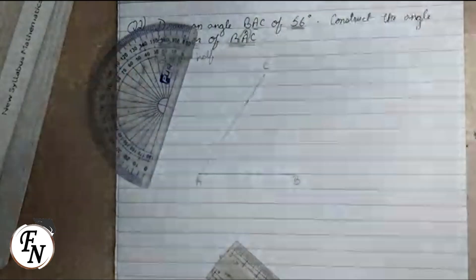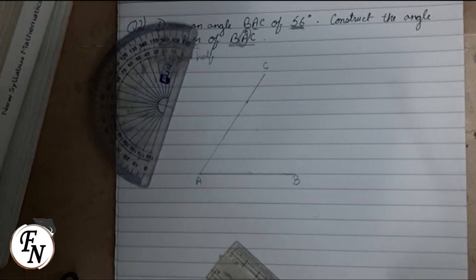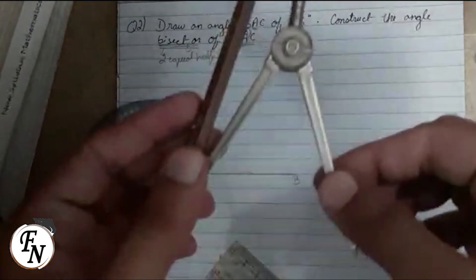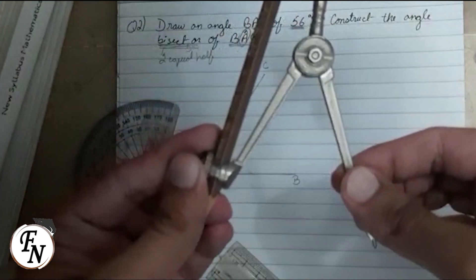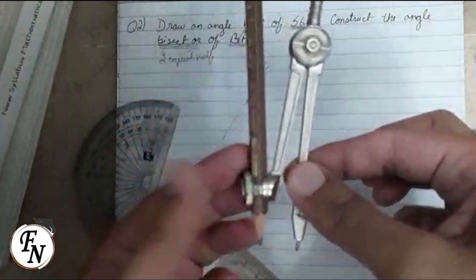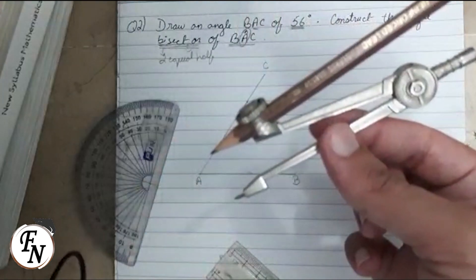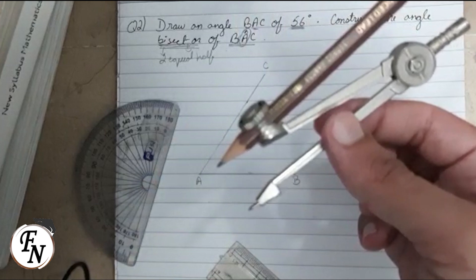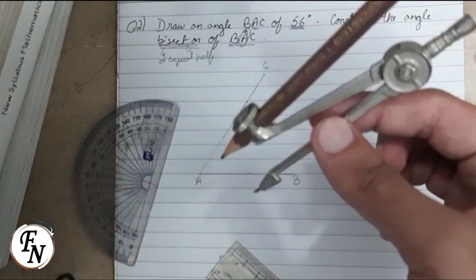Now we need to draw a bisector of this angle, so we will take the compass again. We will open it at a random value—no necessity of any specific value—but once you have taken this compass opening, then you cannot change the radius again.